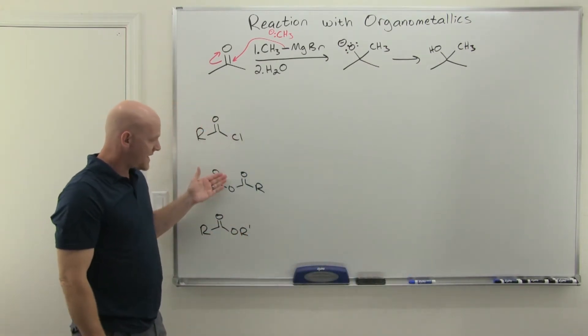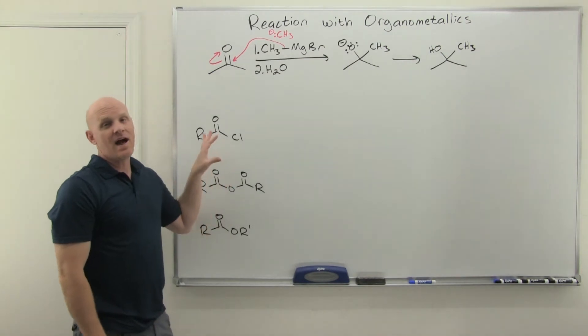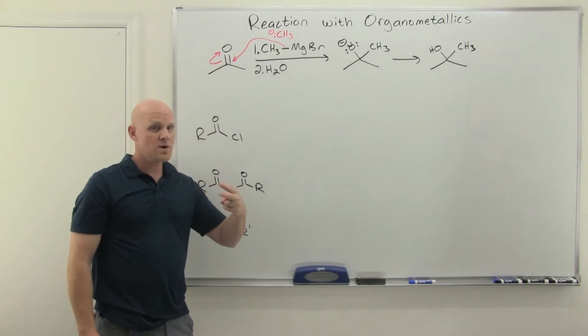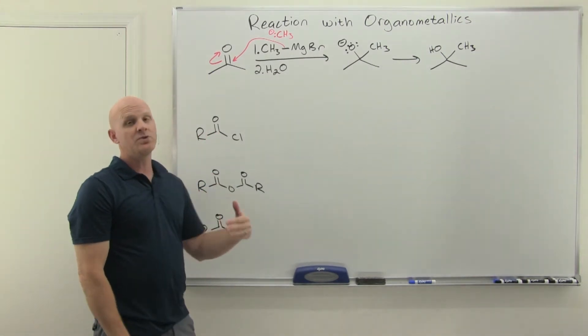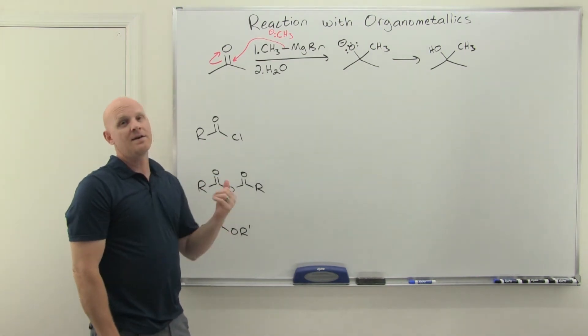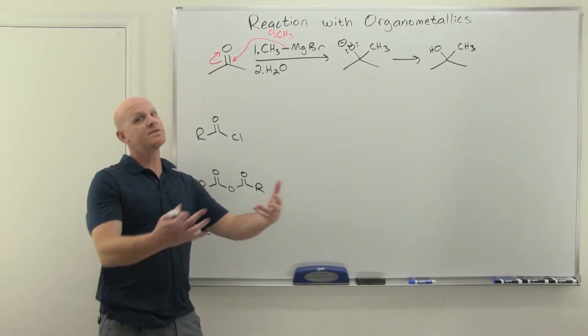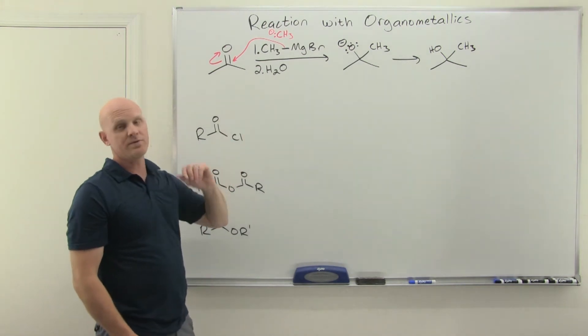Big difference here with our acid chlorides, our anhydrides, and our esters is that now we'll be doing actually the addition of two equivalents, whereas the first one we'll do nucleophilic substitution because we'll have a leaving group. But that's going to form a ketone, and then we'll do nucleophilic addition to that ketone just like we've done here.